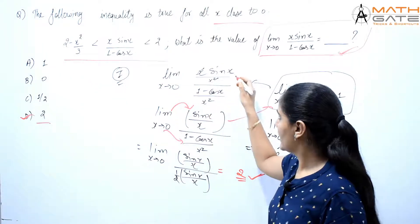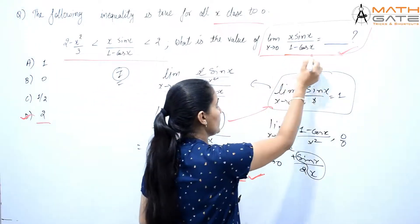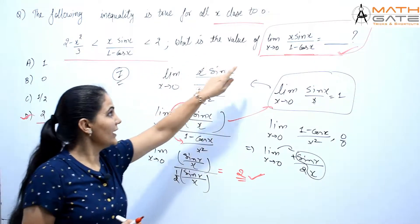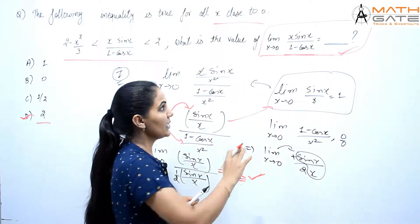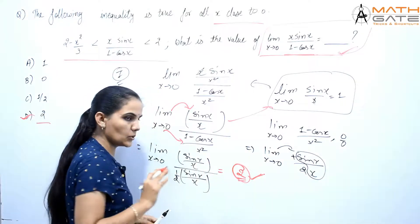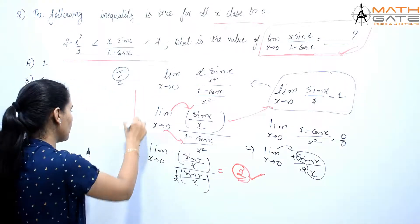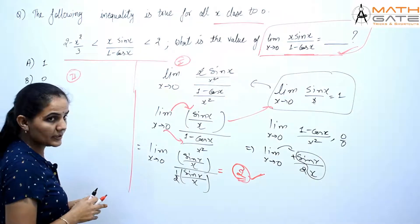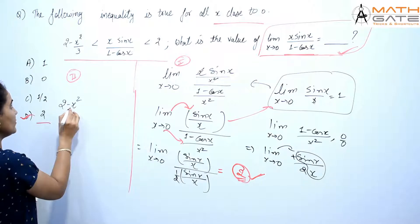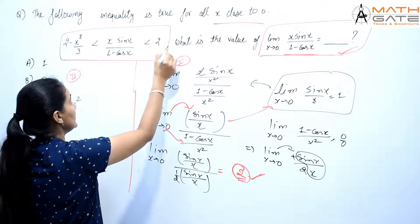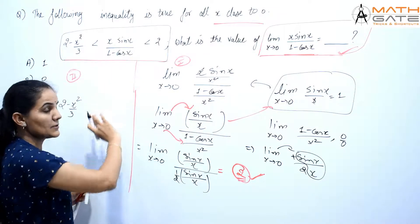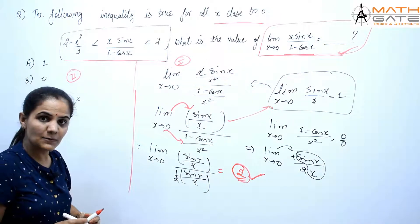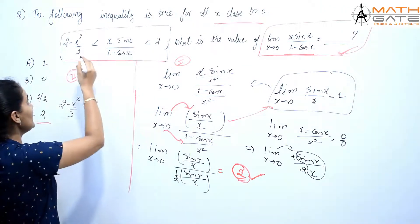So what we had to do here: apply limit x tends to 0 to the function x·sin(x)/(1 - cos(x)). Now the second approach uses the inequality that is given. The inequality is (2 - x²/3) < x·sin(x)/(1 - cos(x)) < 2. We need limit x tends to 0 of this middle function. What we do is apply limit x tends to 0 to all three parts of the inequality.